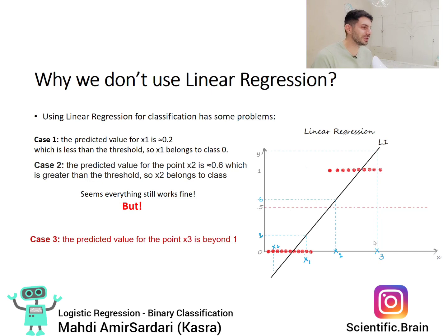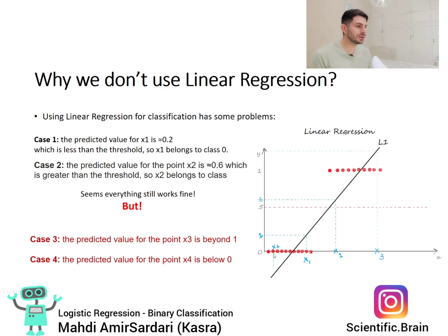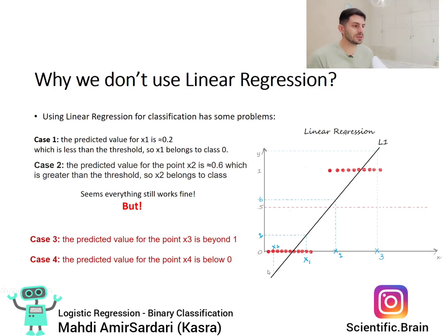But there are problems. For data point x3, the predicted value is greater than 1 — it's an unknown class, because we know values between the threshold and 1 go to class 1, but greater than 1 cannot be allocated to any class. Similarly for x4, the predicted value is lower than 0, which is not between 0 and the threshold, so again it cannot be devoted to any class.